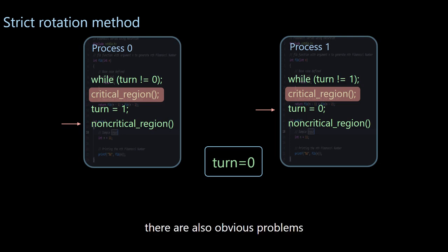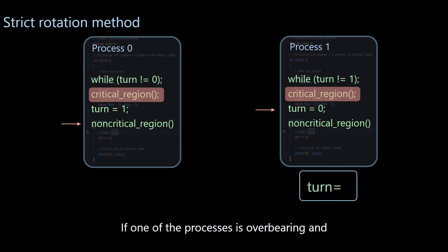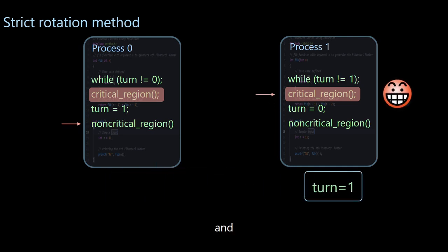However, there are also obvious problems. That is, the processes need to enter the critical section strictly alternately. If one of the processes is overbearing and refuses to come out in the critical section, then the other processes can only wait.